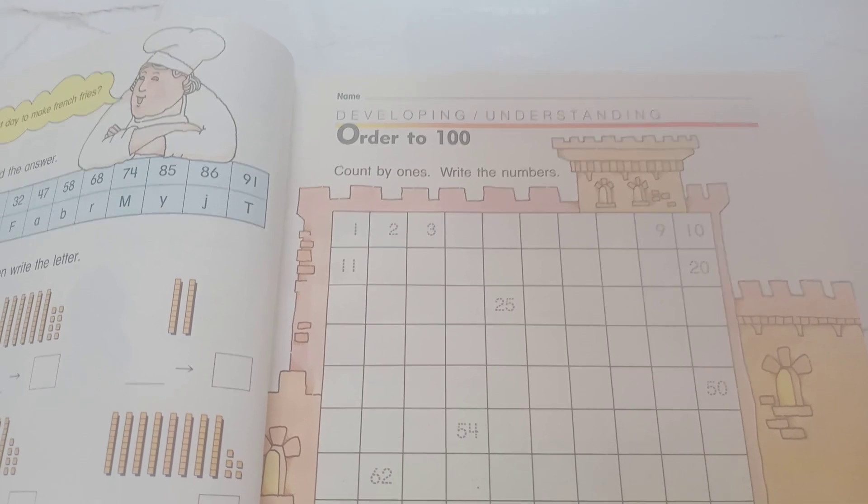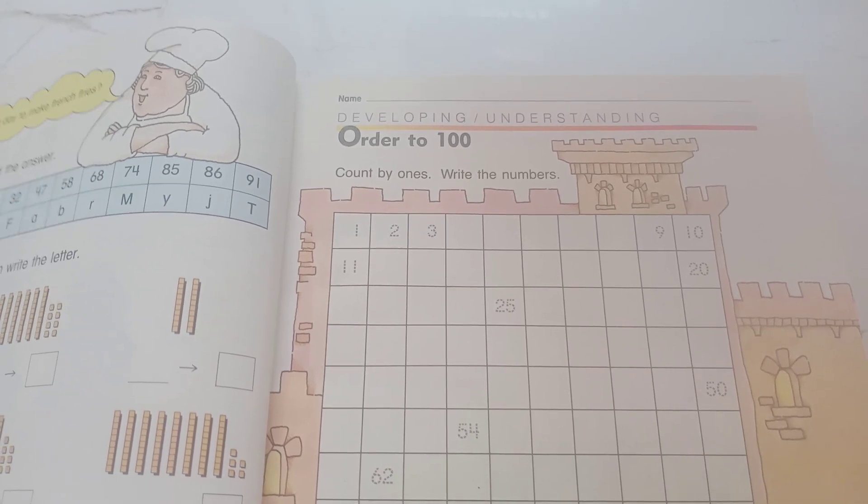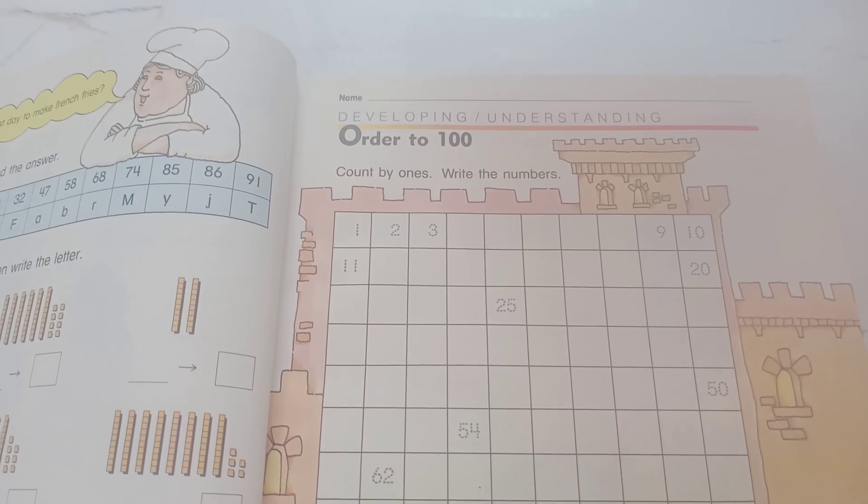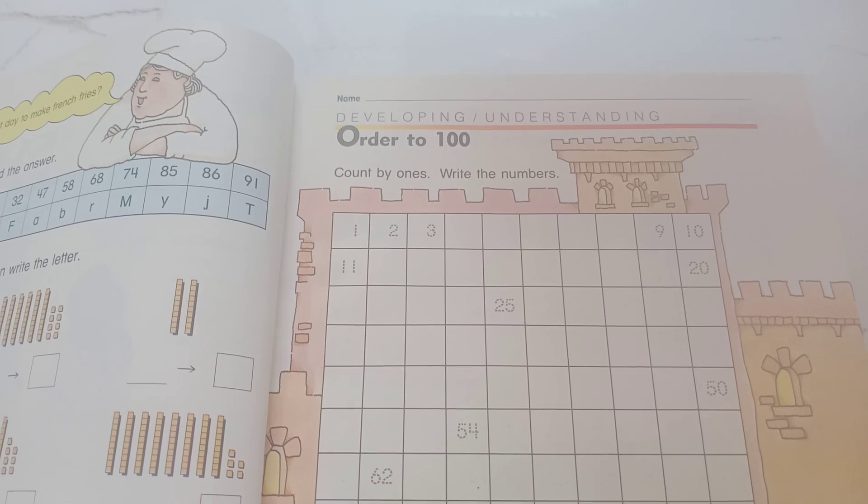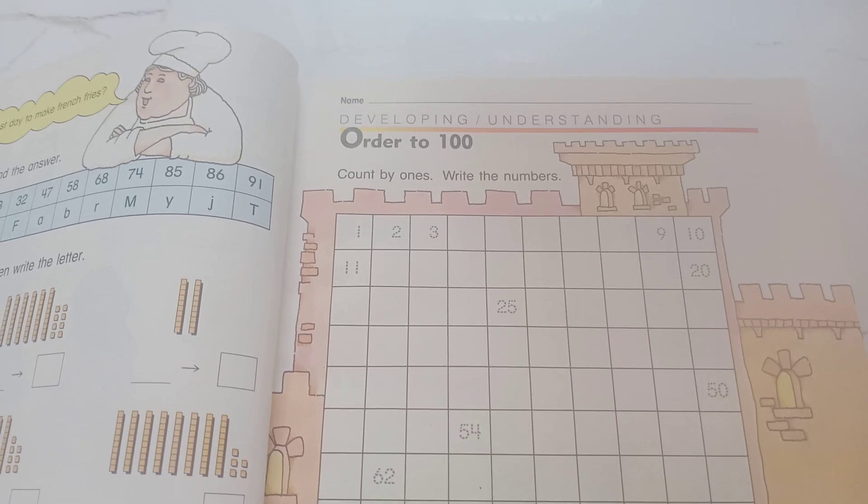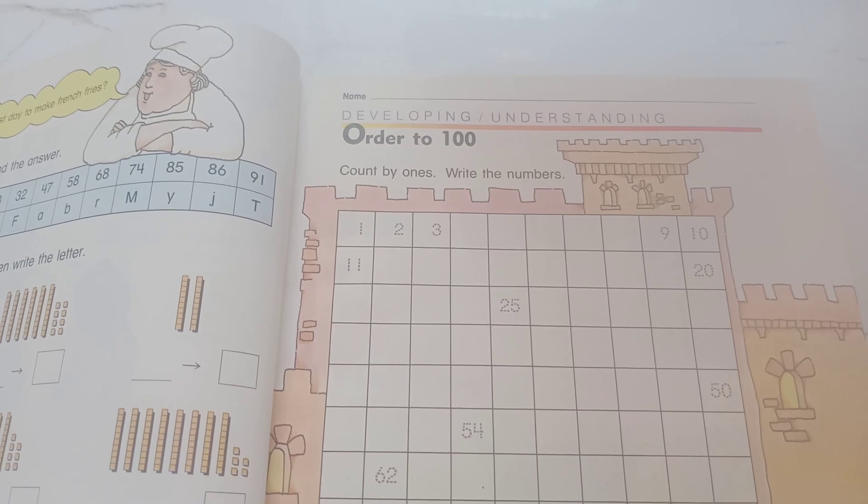81, 82, 83, 84, 85, 86, 87, 88, 89, 90, 91, 92, 93, 94, 95, 96, 97, 98, 99, 100.